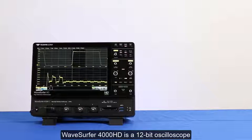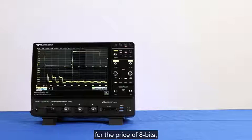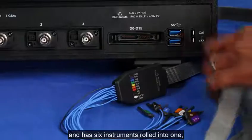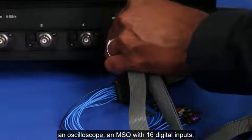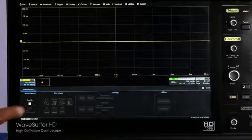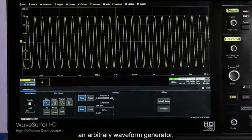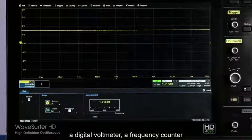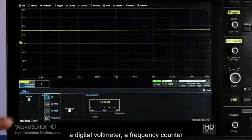WaveSurfer 4000HD is a 12-bit oscilloscope for the price of 8 bits and has 6 instruments rolled into one: an oscilloscope, an MSO with 16 digital inputs, an arbitrary waveform generator, a digital voltmeter, a frequency counter, and a spectrum analyzer.